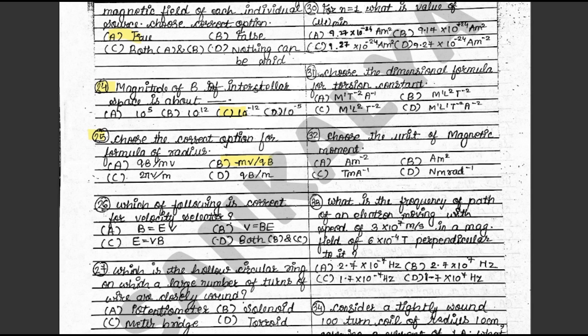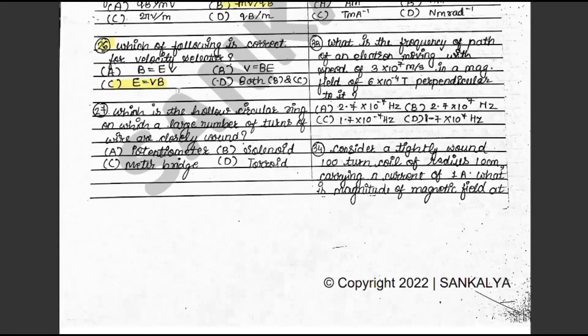Question 26: Which of the following is correct for a velocity selector? The answer is C: E = VB. This is on textbook page 140. Question 27: Which is the hollow circular ring on which a large number of turns of wire are closely wound? The answer is D: Toroid. This is on textbook page 152.